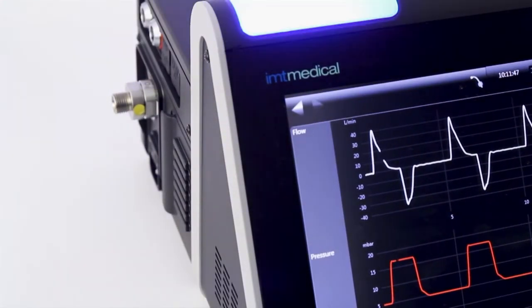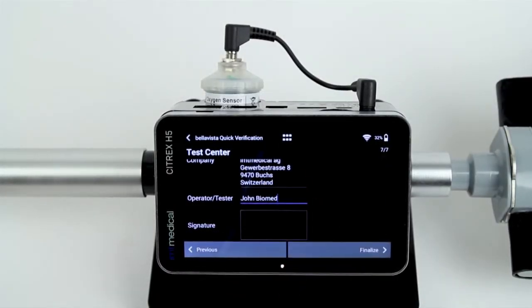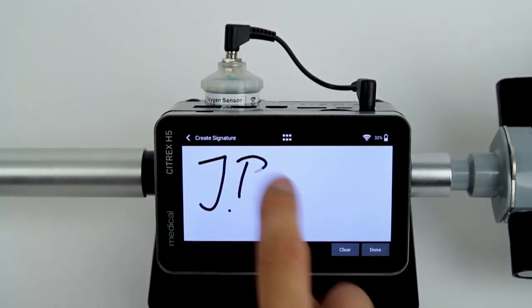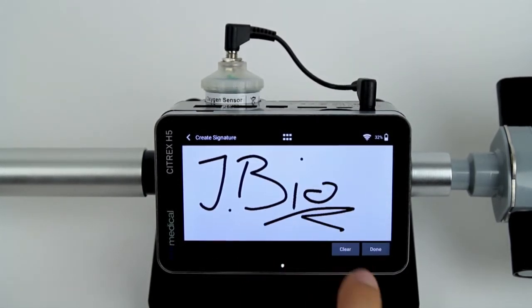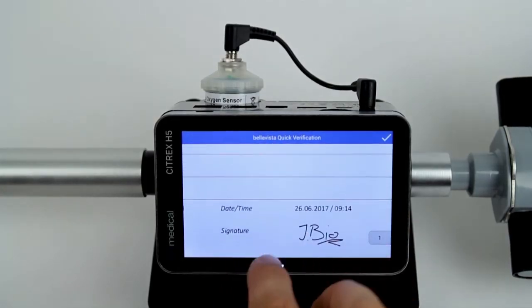At the end, you can enter your information, and how cool is that—sign directly on the Citrix display. The app generates a PDF report, stores it, and makes it available on the cloud.